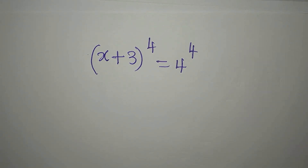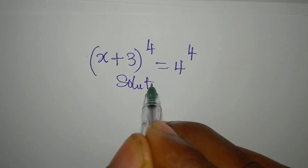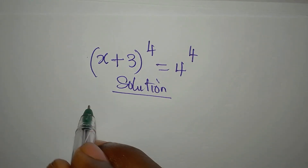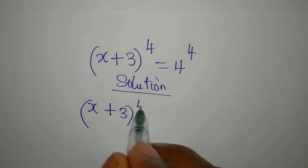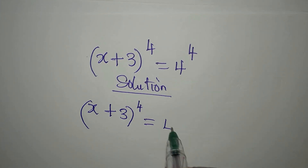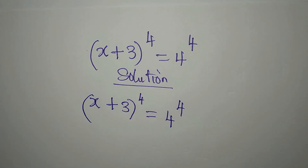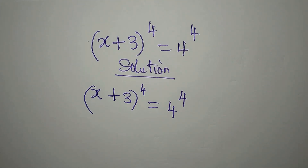Hello everyone, welcome to Few Co-Marts. Here we have another problem to solve: (x + 3) to the power 4 equals 4 to the power 4. The question is: how do I deal with this? Before I start, if you have not subscribed to my channel, subscribe so you can get more of my videos.